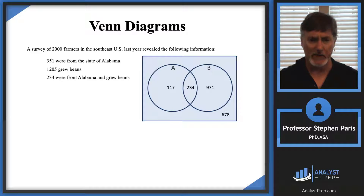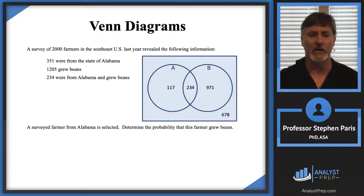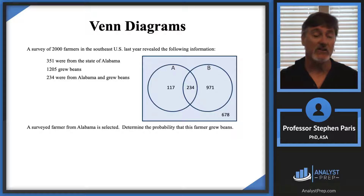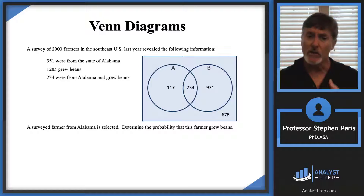We set up our Venn diagram and it looks like this. Maybe we have a question: a surveyed farmer from Alabama is selected — what's the probability this farmer grew beans? So this is a conditional probability question that we've talked about in a previous video. All we're asked to do here is to calculate the probability of B given A.